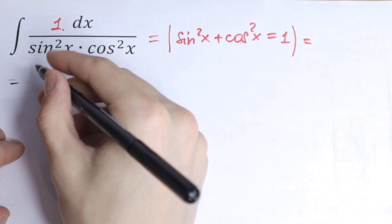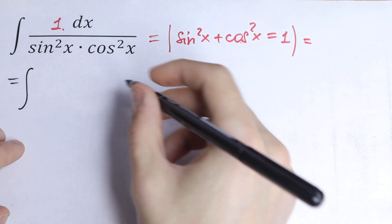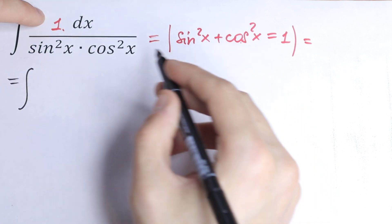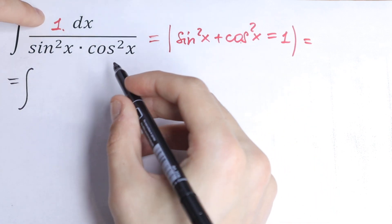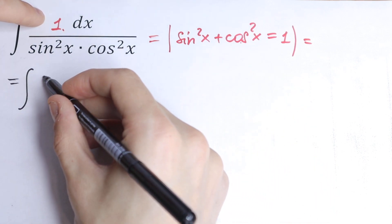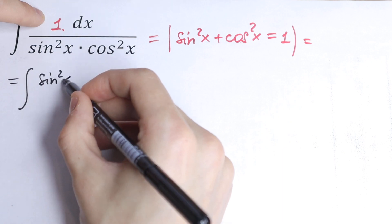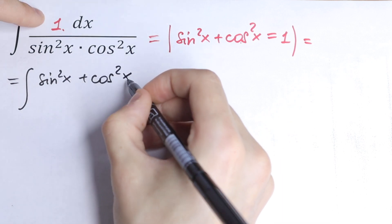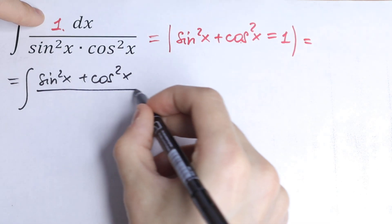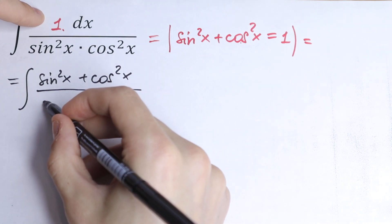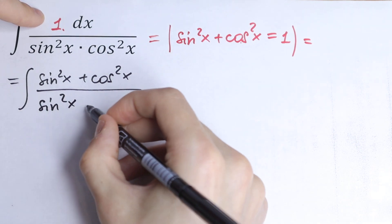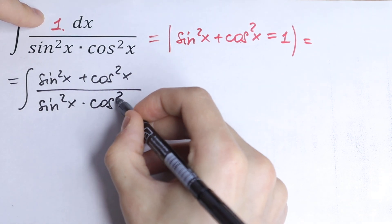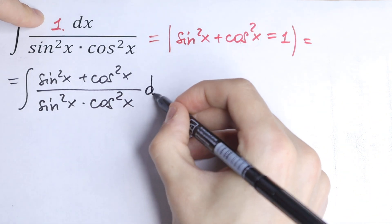So as a result, this undefined integral will be equal to the integral with sine squared x plus cosine squared x all over sine squared x times cosine squared x, dx.